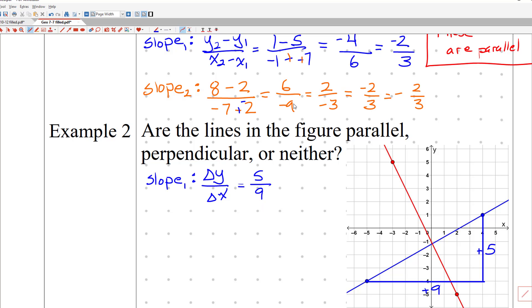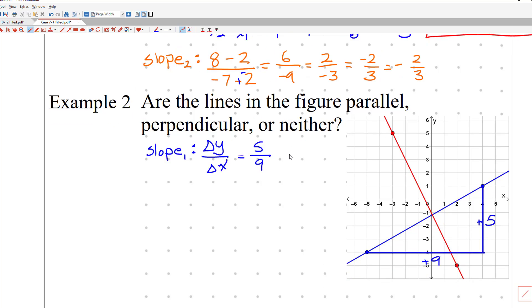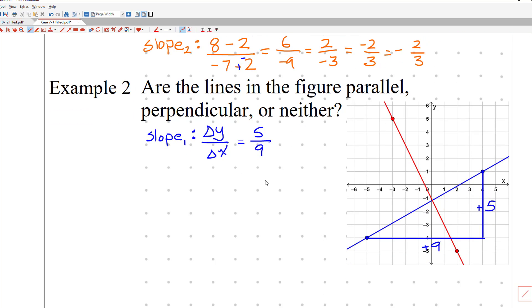So theoretically what we're expecting is our red line should have a slope of negative 9 over 5. We flipped it, right, and we made it negative. A negative flip should be the opposite reciprocal, and therefore it should make it so that these lines are indeed perpendicular, which means we could also make a right angle there. So how do we check that?